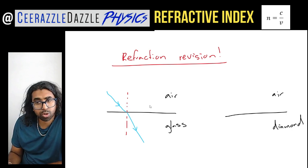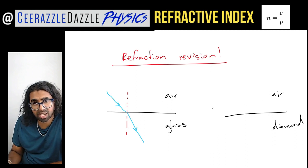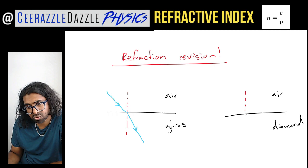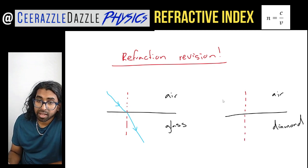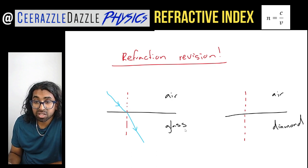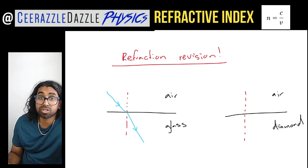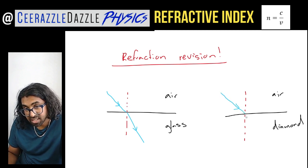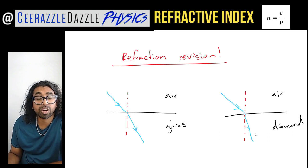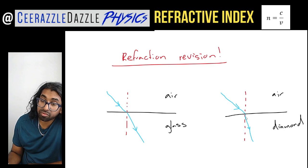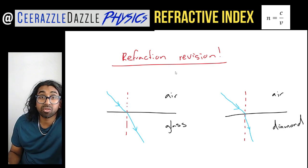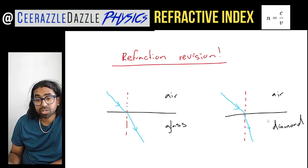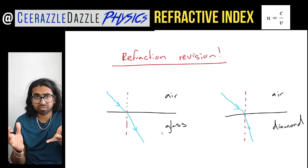On the right hand side we've also got air and diamond, so we're going to have refraction again — there's the normal line. Today's question is: in which scenario will there be the most refraction — air into glass, or air into diamond? Well, air into diamond produces a greater amount of refraction; the refracted ray moves closer to the normal. The reason is that diamond is more optically dense than glass, so diamond causes more refraction than glass.